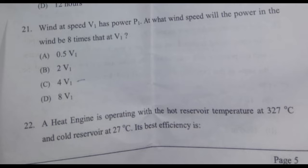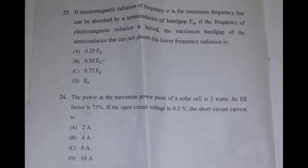Question 22: a heat engine is operating with the hot reservoir temperature at 327°C and cold reservoir at 27°C — its best efficiency is. Question 23: if electromagnetic radiation of frequency ν is the minimum frequency that can be absorbed by a semiconductor of bandgap E, and if the frequency is halved, the maximum bandgap of the semiconductor that can just absorb this lower frequency radiation is. Question 24: the power at the maximum power point of a solar cell is 3 W, its fill factor is 75%, and the open circuit voltage is 0.5 V — the short circuit current is.